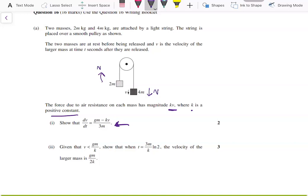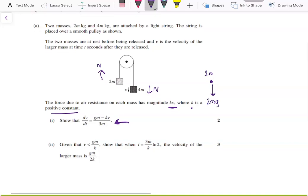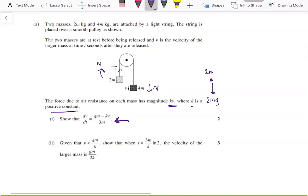So what we can do is look at the forces on each of the masses. The 2m mass will experience a downward weight force of 2mg. That's the weight force. We'll experience an upward tension force in this string, so we'll have a force of T here.